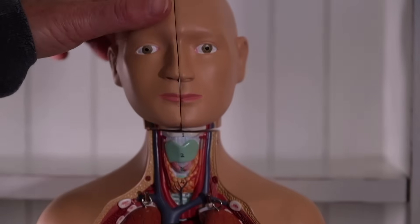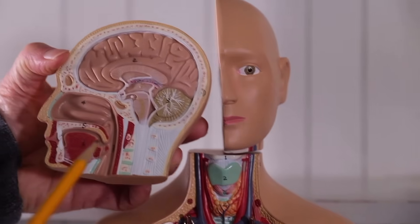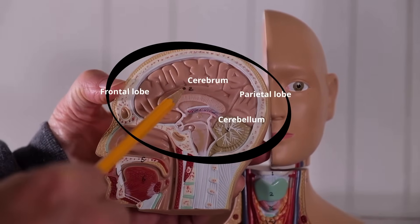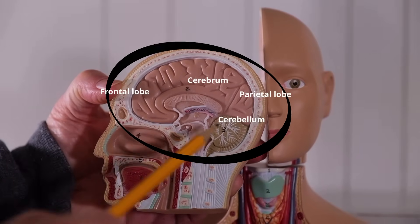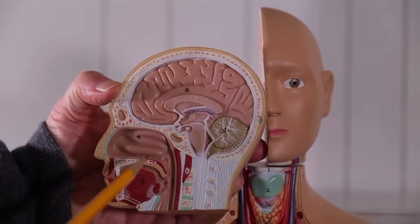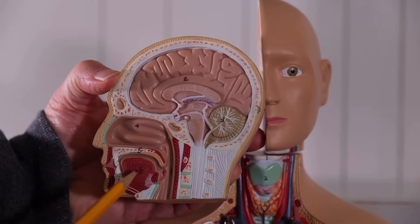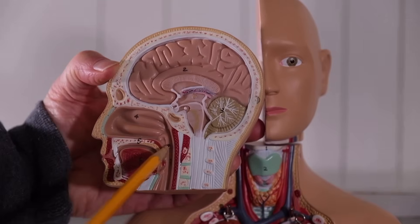Let's get started with the head region. As I open it up, you can see the brain — here's the cerebrum, the cerebellum. Now let's move to the nasal cavity, the oral cavity. This large muscle is the tongue, and at the back of the throat is the pharynx right here.